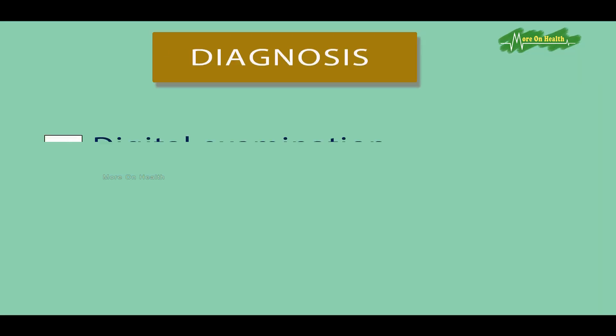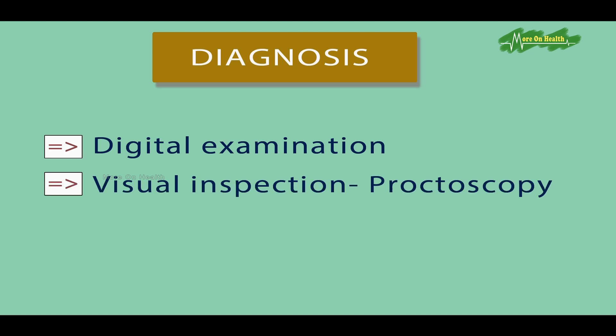We diagnose piles with clinical history, then do a per rectal digital examination — putting a finger inside to check for bleeding or soft piles. We do a proctoscopy, a specialized instrument which goes inside the rectum to visualize the piles. In some cases we may also do a colonoscopy to rule out other pathology in the colon, though colonoscopy per se is not required to diagnose piles as it is a clinical and rectal examination diagnosis. But sometimes we need to rule out other pathology alongside piles.